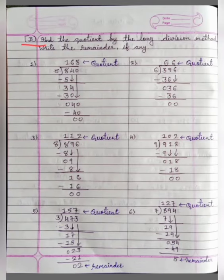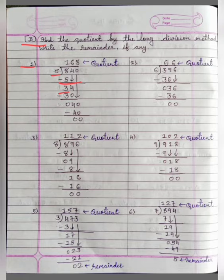Question B: Find the quotient by the long division method. Write the remainder if any. Number 1: 840 divide by 5. 5 ones are 5. 8 minus 5 is equal to 3. We will bring down this 4 here, so now we have 34.